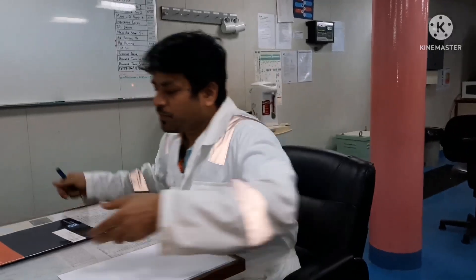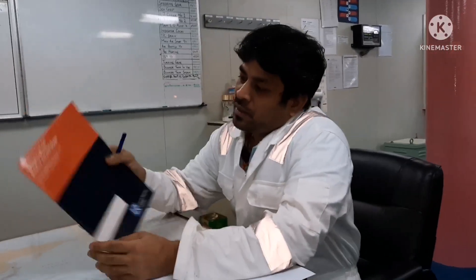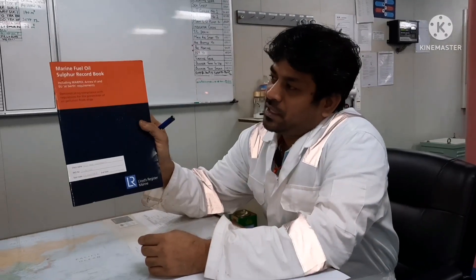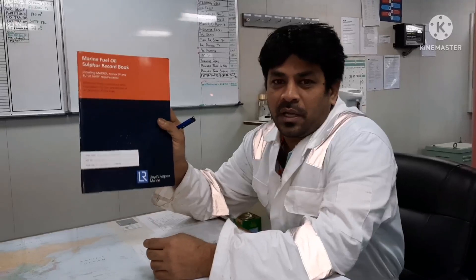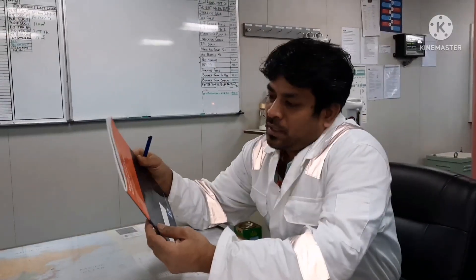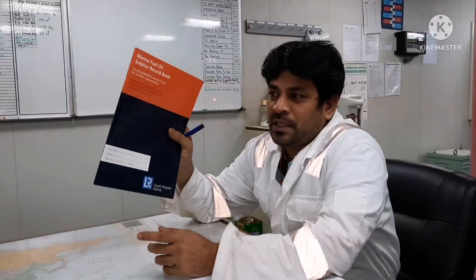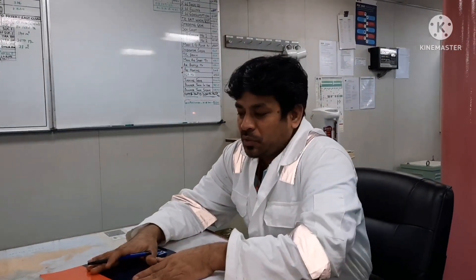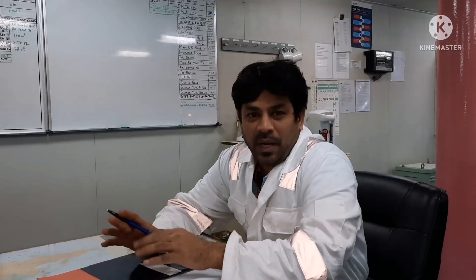This is what we call the Sulphur Record Book, and this Sulphur Record Book contains information about only fuel oil. No other information will be recorded in this book. This Sulphur Record Book has 6 parts.